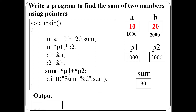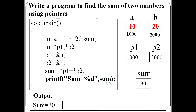Next step: sum equal to star p1 plus star p2. Star p1 dereferences address 1000 — the content is 10. Star p2 dereferences address 2000 — the content is 20. So 10 plus 20 equals 30, which is the same value. Finally display the sum. Sum equal to 30 will be the output.